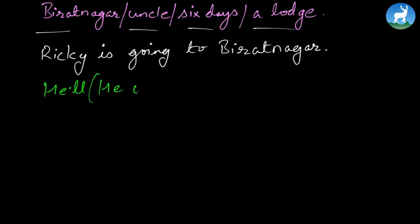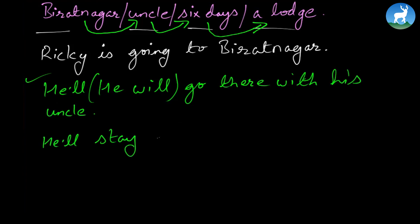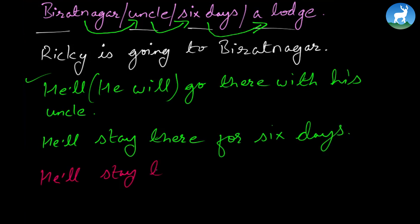He'll go there. Remember, we're interconnecting one word to the other — all words or phrases given must be interconnected. He'll go there with his uncle. He'll stay there for six days. And finally, he'll stay there in a lodge. We follow the same pattern, changing the event to simple future.